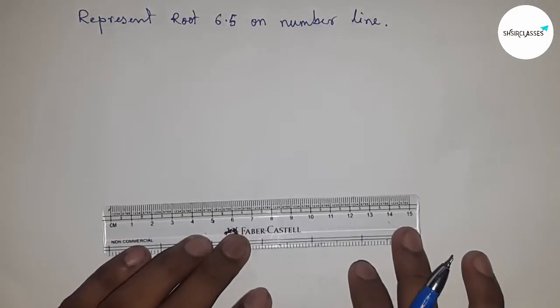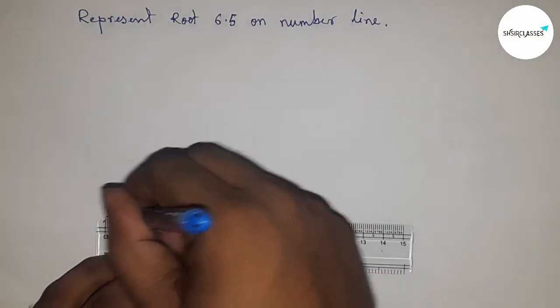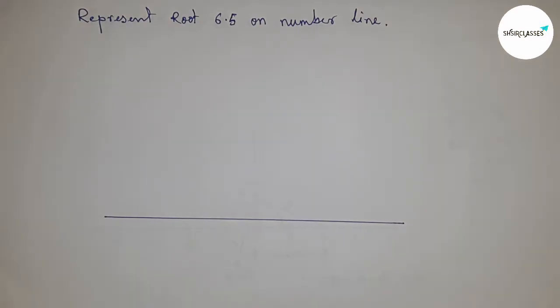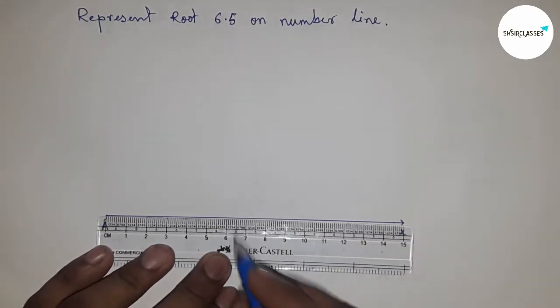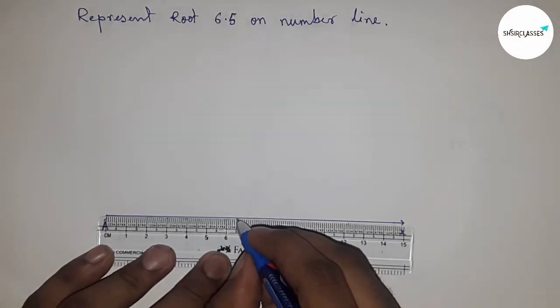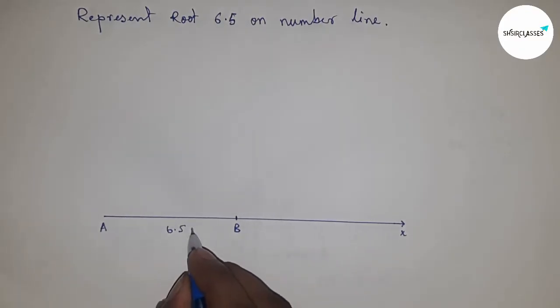First of all, draw a line of any length here, and this is the AX line. Next, take a length of 6.5 centimeters by scale. This is point B, so AB equals 6.5 centimeters.